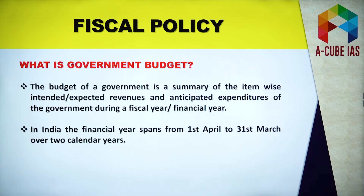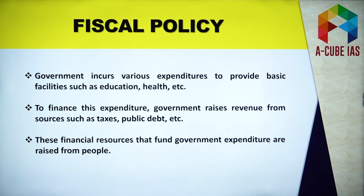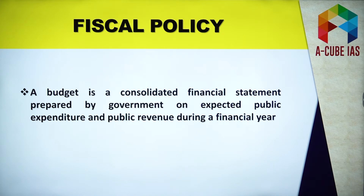Such expenditure of government promotes welfare of the people. To finance this expenditure, government raises revenue from various sources such as taxes, public debt — and these financial resources that fund government expenditure are raised from the people. A budget is a consolidated financial statement prepared by the government on expected public expenditure and public revenue during a financial year.